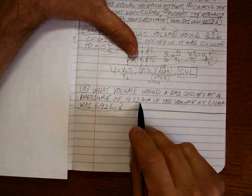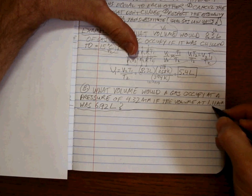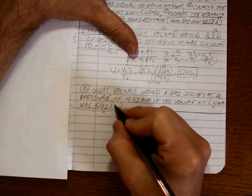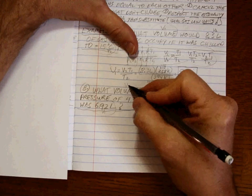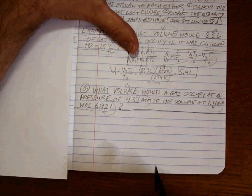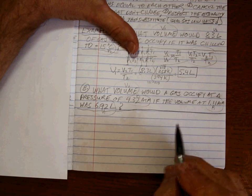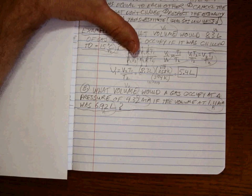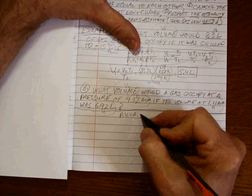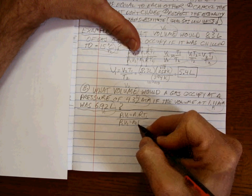I'll move it up a little bit. What volume would a gas occupy at this pressure if the volume at this pressure was this? Is it clear that this is the pressure that goes with this volume? Okay, and if we're going to solve for V2, we want to know at the new pressure. I hope that makes sense to you. You have to do that right, because if you don't, you mess up the problem for sure.